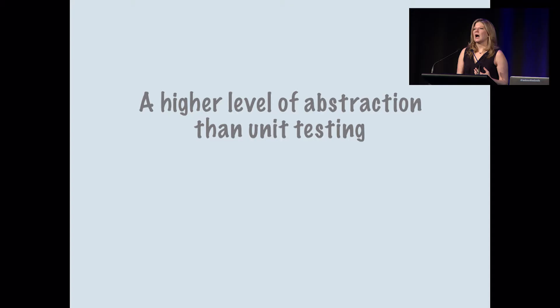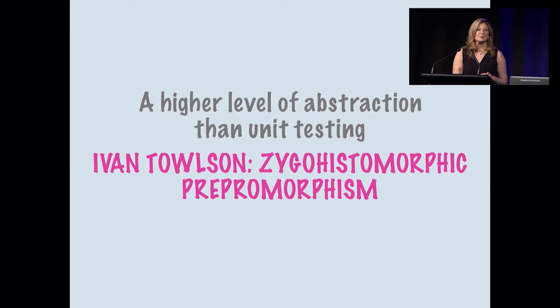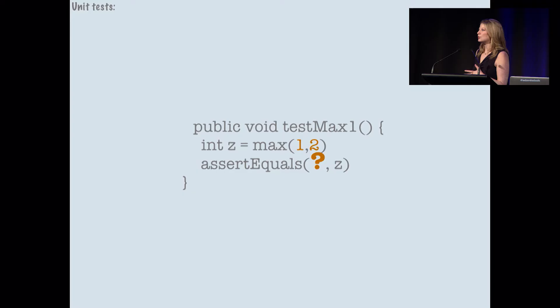Property-based testing is a higher level of abstraction than unit testing, and developers absolutely love abstraction. Abstraction is good. So let's look at some unit tests to give you an idea of what I'm talking about.